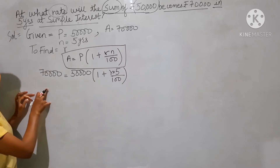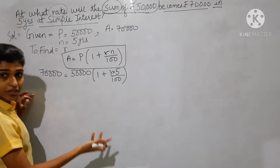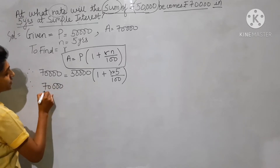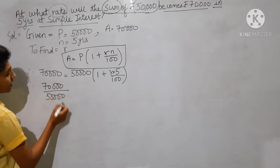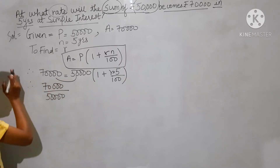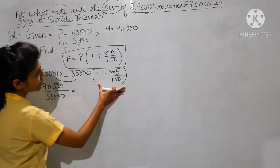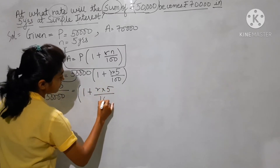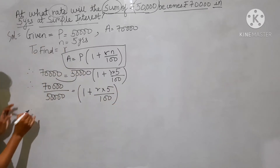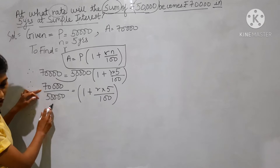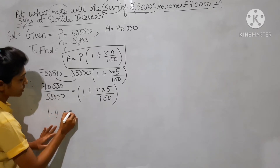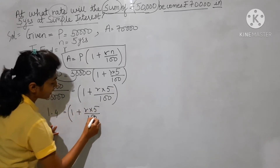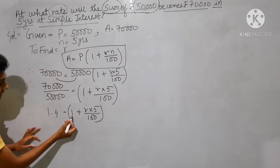Now we will bring this 50,000 to this side. If we bring 50,000 to this side, the sign will change — it will become division. Therefore 70,000 divided by 50,000 is equals to 1 plus r into 5 divided by 100. So 70,000 divided by 50,000 gives us 1.4.